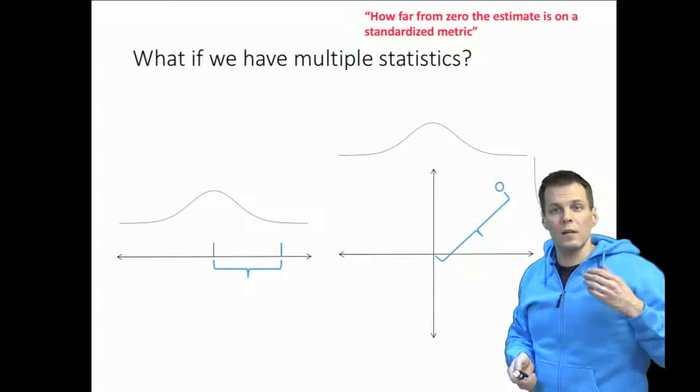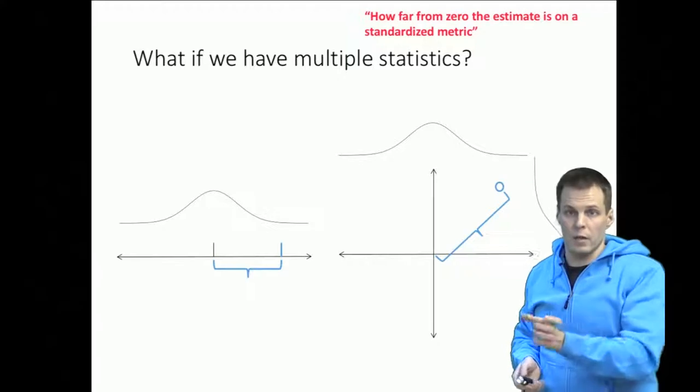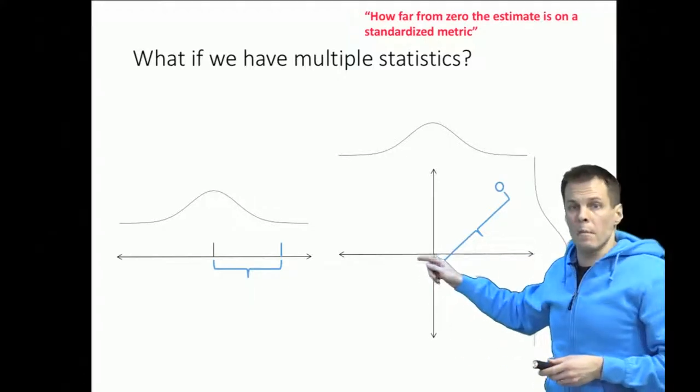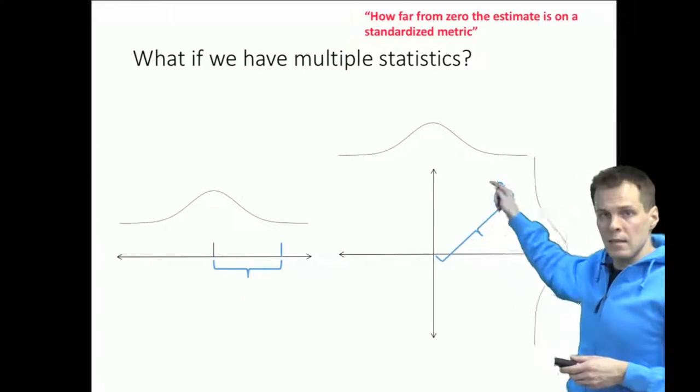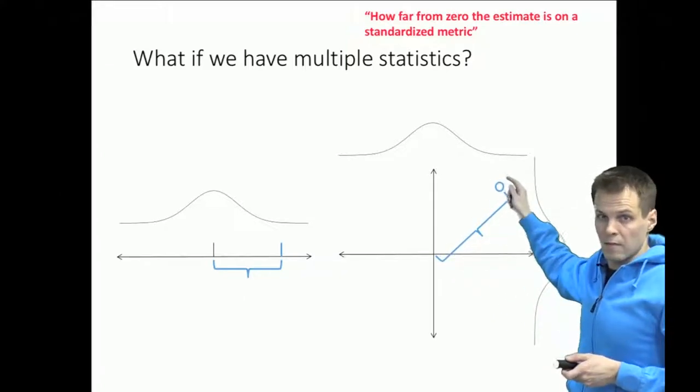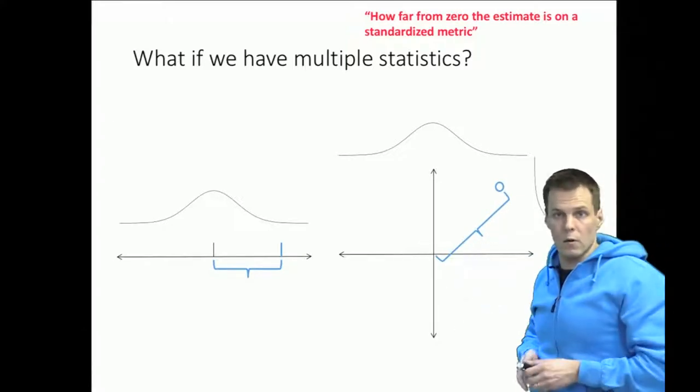In practice we do that except we don't take the square root because we just want to have some reference value and it doesn't matter whether we get this distance as a reference value or the square of this distance as a reference value. It's quicker if we don't take the square root.